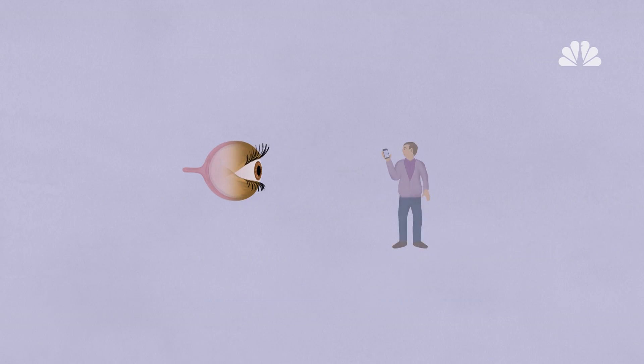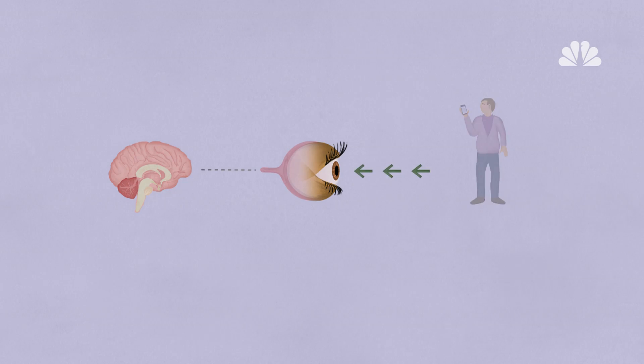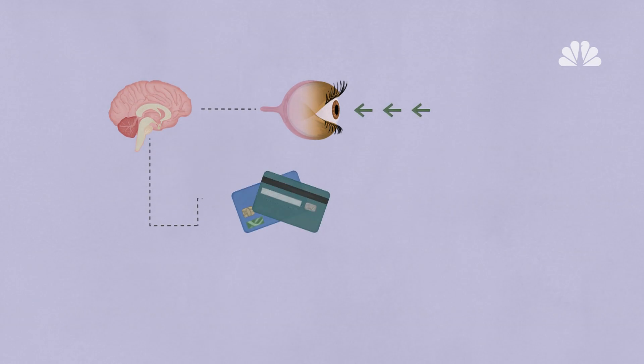But when it comes to consuming the content others share, the effects on our brains aren't always so pleasurable. Scrolling through social feeds can temporarily reduce self-control, particularly when it comes to spending or eating.